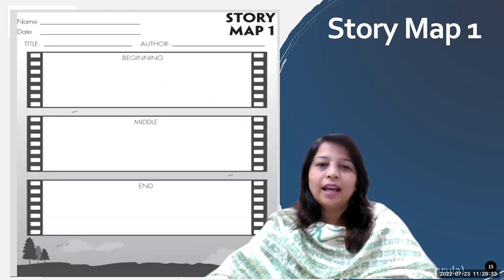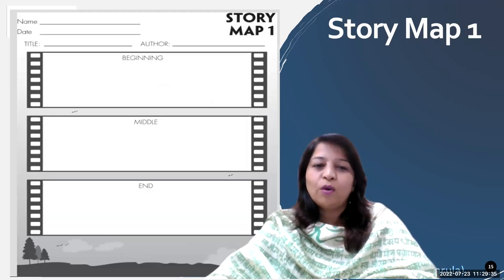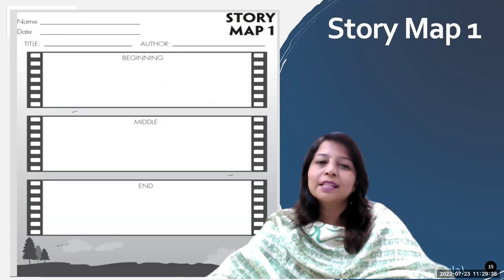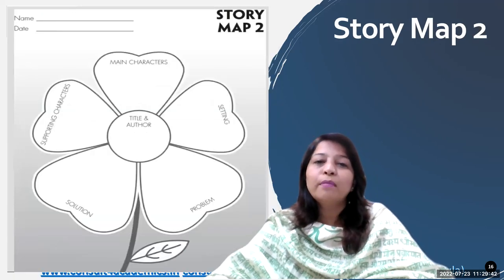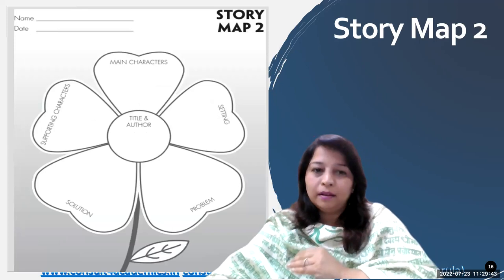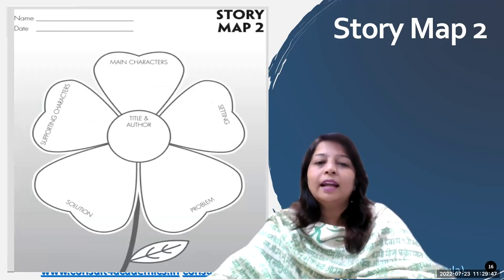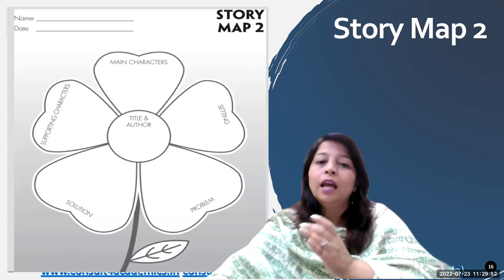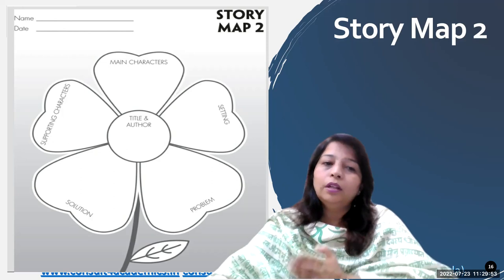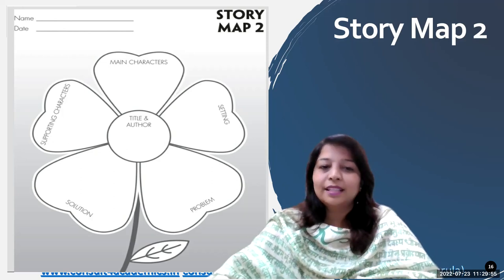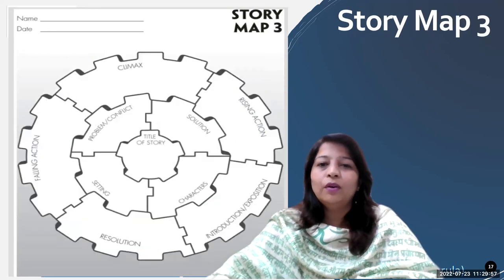Moving ahead, that is story map one — very common. We have been using in our classes beginning, middle, and end of a story. Next is story map two, a little bit higher version. In that, they have to mention the title and the author, the main characters, the setting of the story, problem, solution, and supporting characters as well.